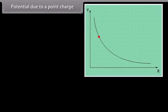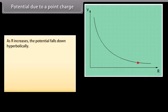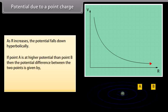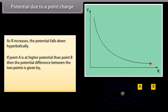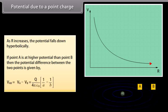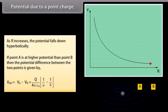We can show in the graph that as R increases, the potential falls down hyperbolically. If point A is at higher potential than point B, then the potential difference between the two points is given by V_AB equals V_A minus V_B. Putting the values of V_A and V_B, we get V_AB equal to Q upon 4π ε₀ multiplied by 1 upon A minus 1 upon B.